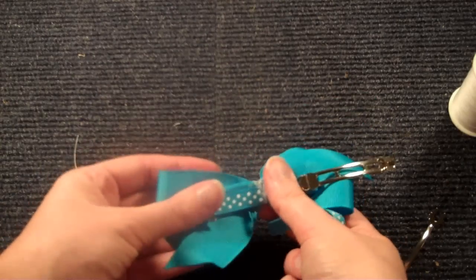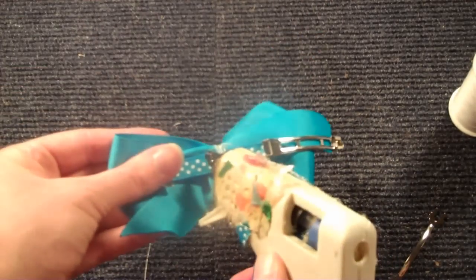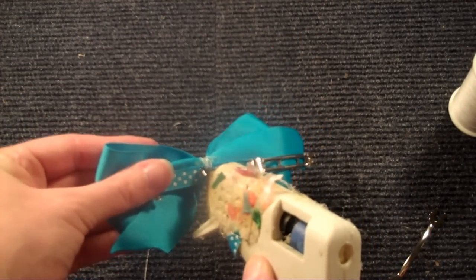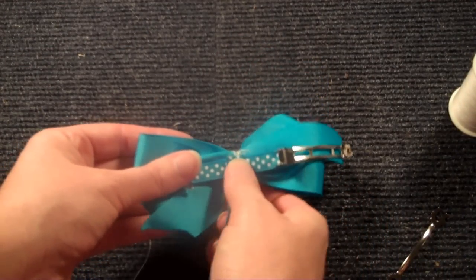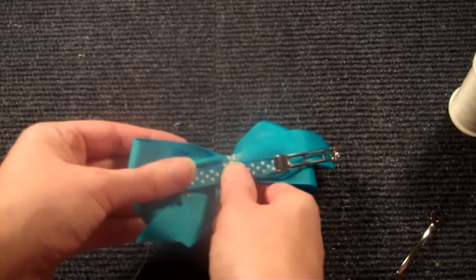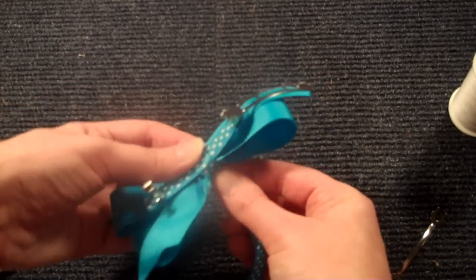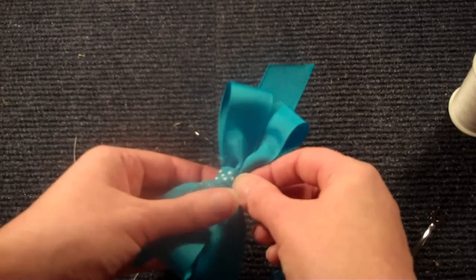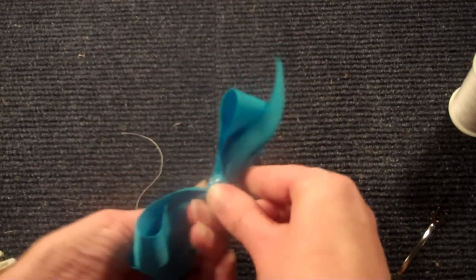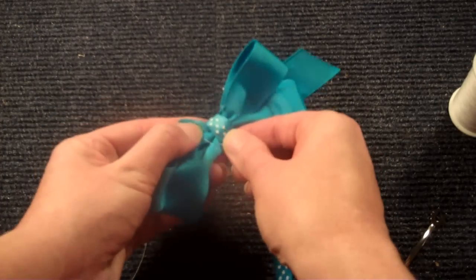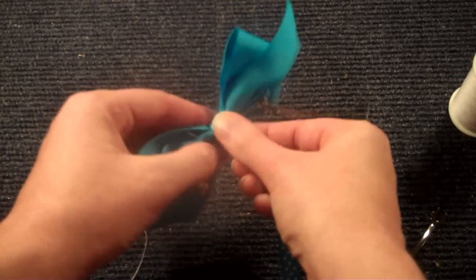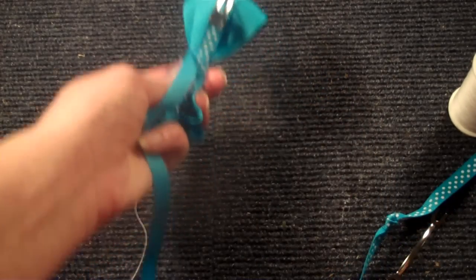You're going to turn your bow over on the bottom and put a dab of glue right there in the center. Take your ribbon, press down your ribbon end, and then you're just going to wrap. I wrap a few times. Just keep wrapping, and then secure it one more time at the back.